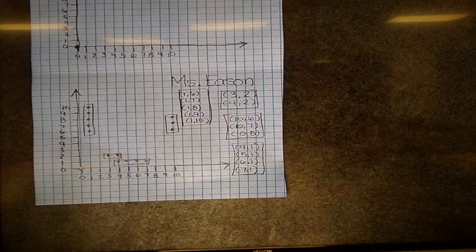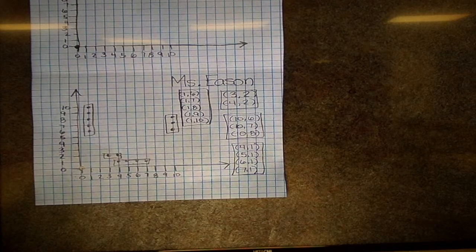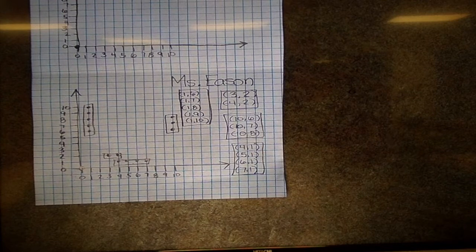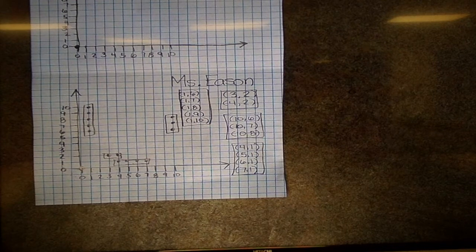Once you've placed all of your boats in your ocean, a two, three, four, and five point boat, it's time to find a partner.